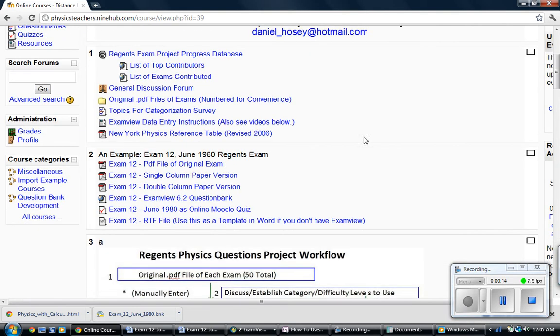What you're going to want to do is go here and go to Exam 12 RTF file. Use this as a template in Word if you don't have ExamView, and you're going to download that to your desktop.